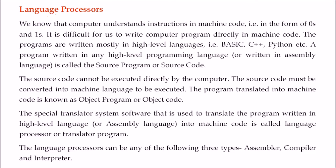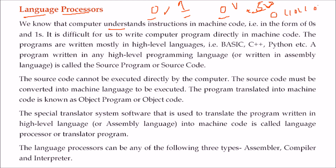What are language processors? To understand the processing of various languages in computer science, we first need to understand that a computer only understands 0 and 1 — that is, 0 volts or 5 volts. These binary values are the only thing understood by the computer. So is it possible for us to write something in binary like 0 1 1 0 1 1? It may not be so easy.